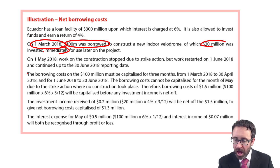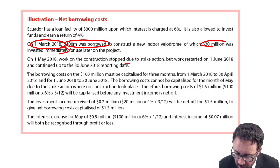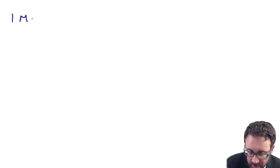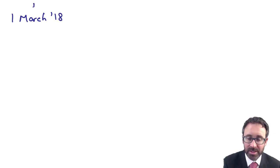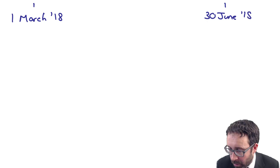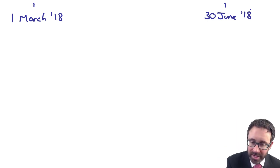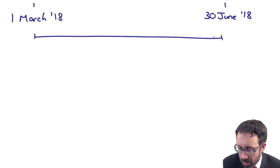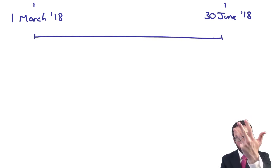The reporting date is the 30th of June 2018. Let's draw it out visually. We have the 1st of March 2018 through to the reporting date of the 30th of June 2018 — that's March, April, May, June — four months.